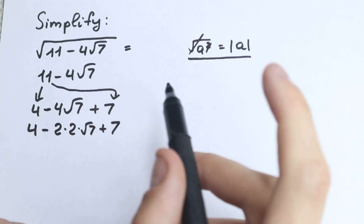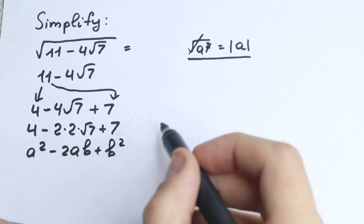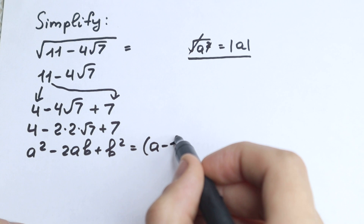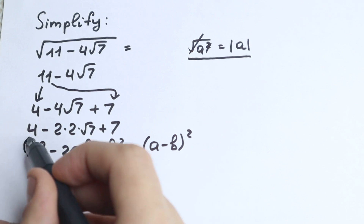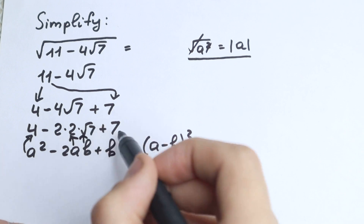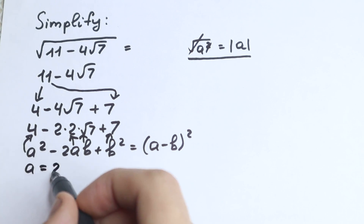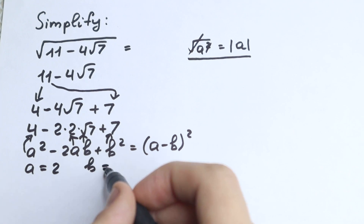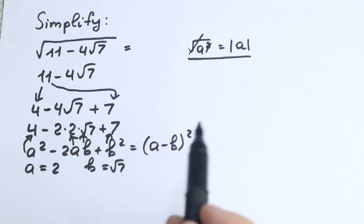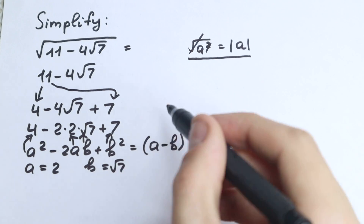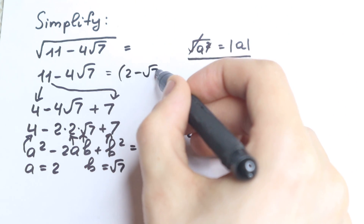Now look at the formula a squared minus 2ab plus b squared, which equals (a minus b) squared. Comparing our expression, we see a squared is 4 so a equals 2, and b squared is 7 so b equals square root of 7. The middle term 2 times 2 times square root of 7 matches 2ab perfectly. So we can write the whole expression as (2 minus square root of 7) squared.